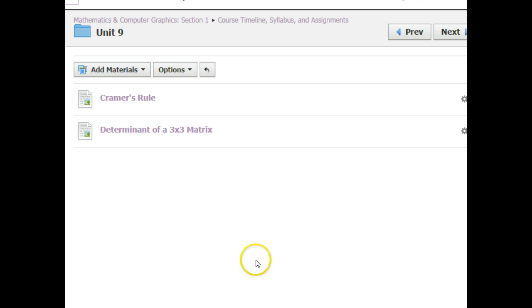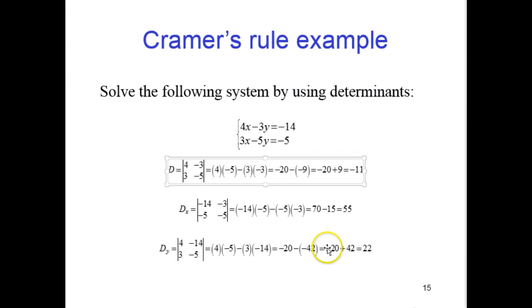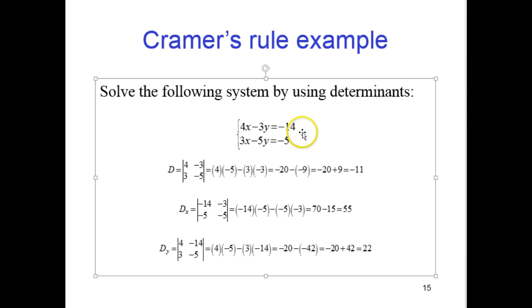And then, for our dₓ, we take the constants, the minus 14, the negative 14, negative 5.